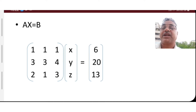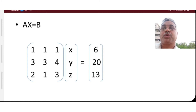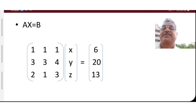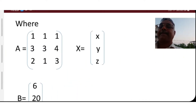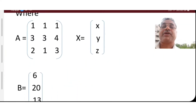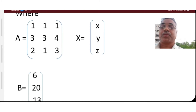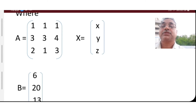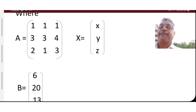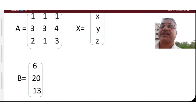So this is of the form Ax equal to b. Matrix A is the coefficient matrix: 1 1 1 / 3 3 4 / 2 1 3. Vector x is [x, y, z], and vector b is [6, 20, 13], which are the right-hand side values of the equations.